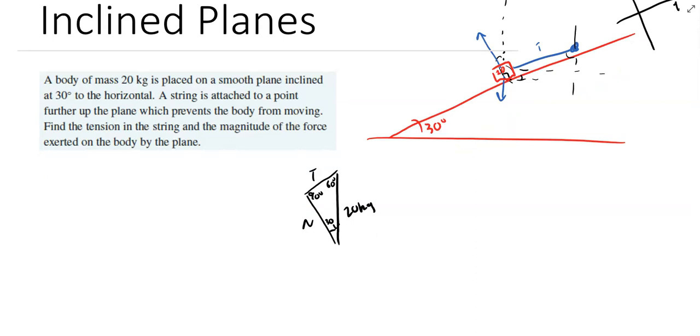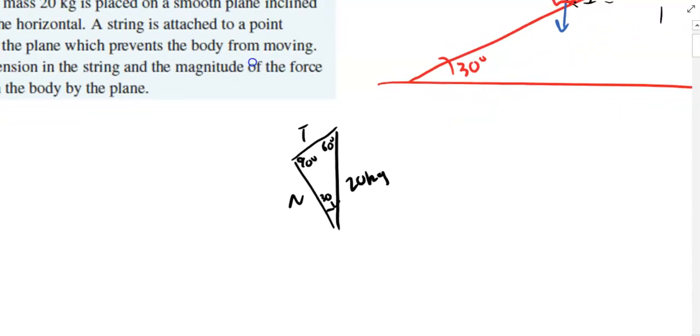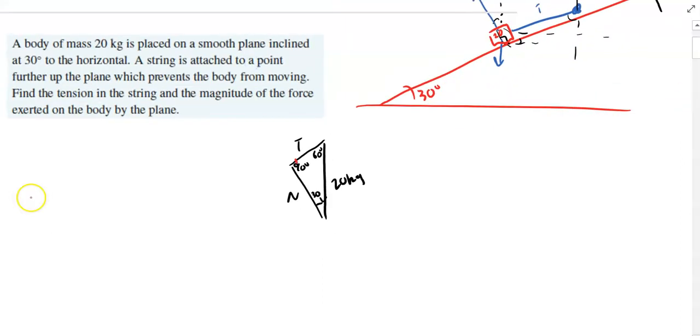So it's pretty straightforward from there. Because what I have is a right angle triangle. You can see that right angle in there. And if I want to know this weight, I can just do a trigonometric ratio. If I want to know the normal contact force, I can just do a trigonometric ratio as well.